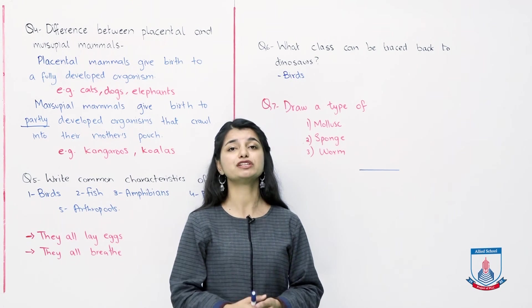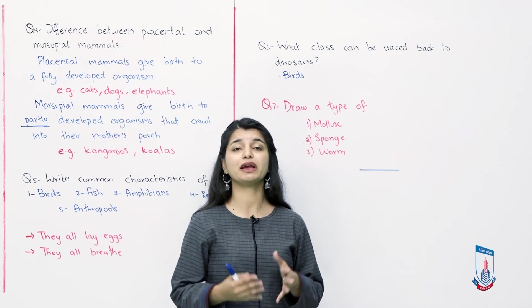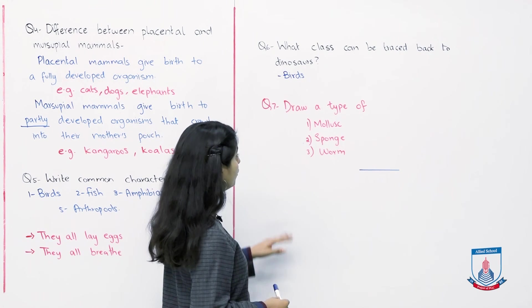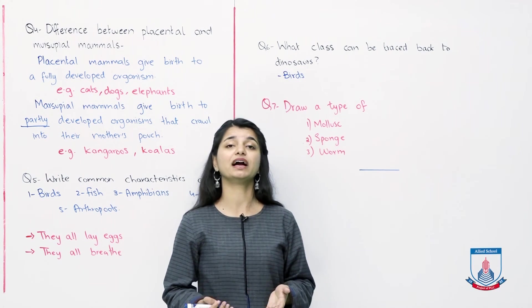This is a simple question. You can also write it in one-word answer. Try to attempt it in a nice way. Question number 7: Draw a type of mollusk, a sponge, and a worm. This is again very easy.